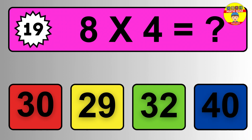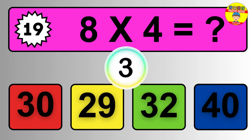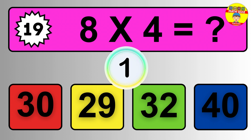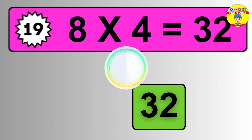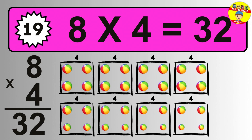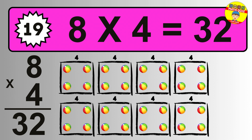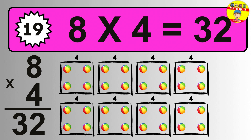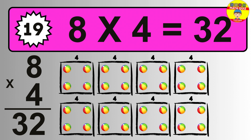Question nineteen: eight times four equals what? The answer is eight times four is thirty-two. To calculate, we have eight groups with four balls each. So how many balls do we have? Thirty-two balls.